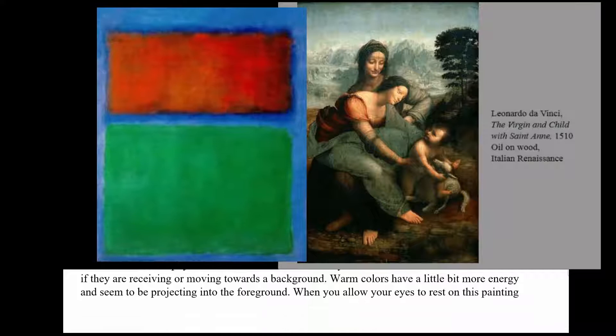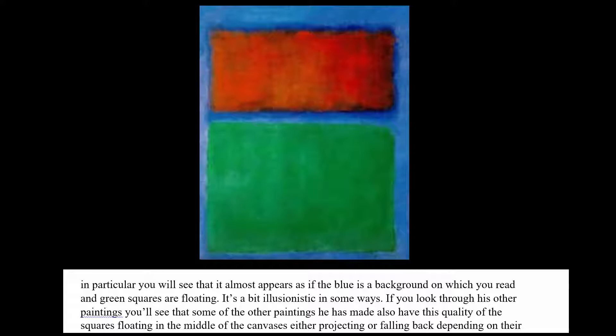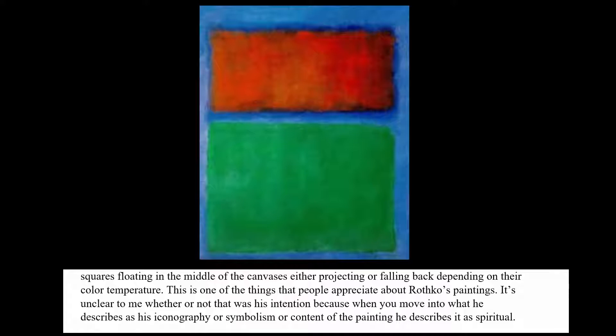If you let your eye rest on this painting, you'd see that it almost feels like the squares in the background are floating. The blue appears to be the background; the muted green square sits between the red plane and the blue plane. He makes these squares float almost as if they're an illusion of reality — almost like a kind of landscape, even though they're abstract paintings.